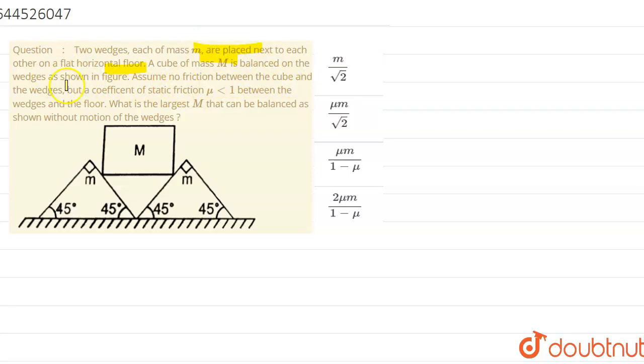A cube of mass M is balanced on the wedge as shown in the figure. Assume no friction between the cube and the wedge, but the coefficient of static friction mu is less than 1 between the wedge and the floor. What is the largest M that can be shown in the figure without motion of the wedge?